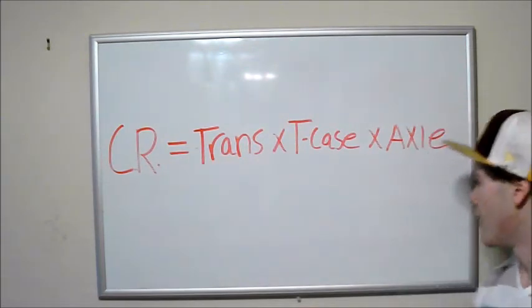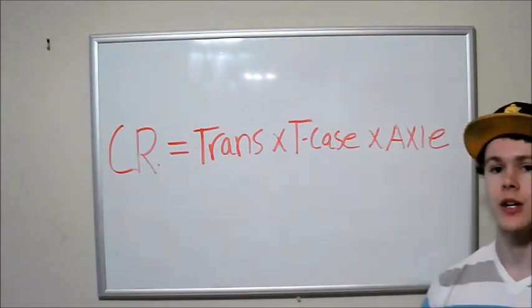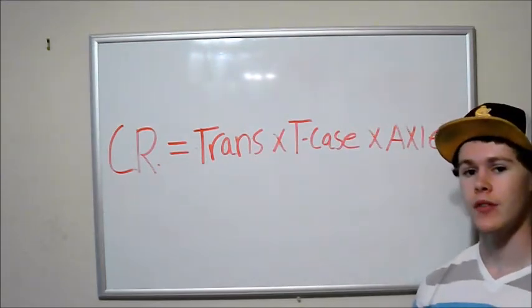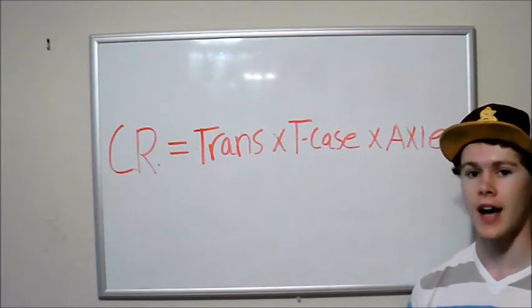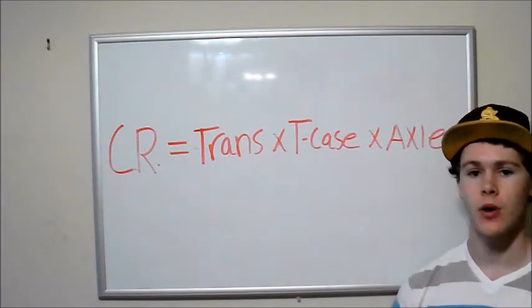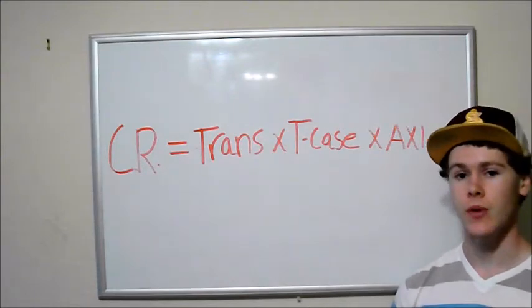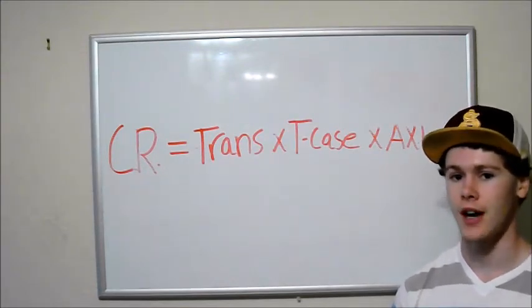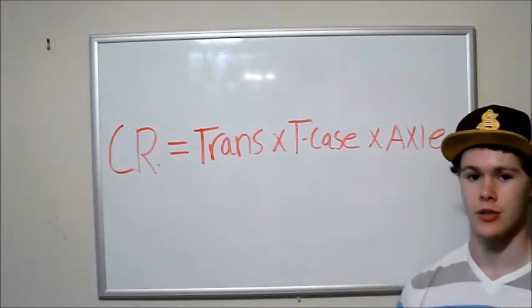And then if we have a 3 to 1 axle ratio, that means for every three revolutions of the drive shaft, we're going to get one revolution of the axle or one revolution of the tires. So like what we said before, your crawl ratio is how many engine revolutions per one revolution of the tire. So to do that, we just multiply each one of these ratios together.